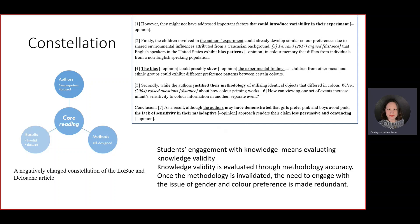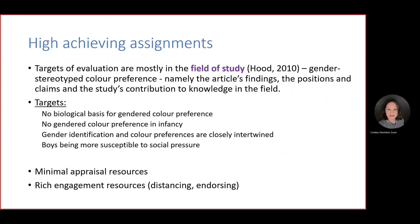But again, it's not enough to just tell them it's not about criticizing, which I thought would be sufficient but apparently wasn't. So this is what the high-achieving assignments do: they essentially just look at the field of study. These are the types of targets they might engage with: for example, there's no biological basis for the colour preference — these are part of the results. They might engage with that part of the results and then develop further.